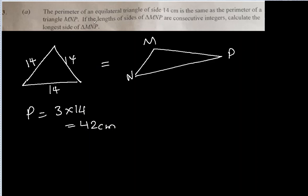However, the lengths of the sides of MNP are consecutive integers. So if this is a, this is a plus 1, and this is a plus 2. They are integers, so first one more and another one more. Calculate the longest side of triangle MNP. Basically we have to find a plus 2 because this is the longest side.